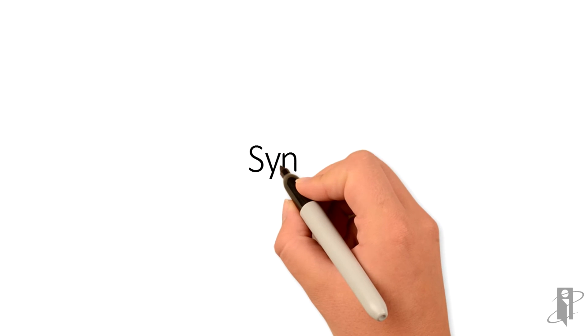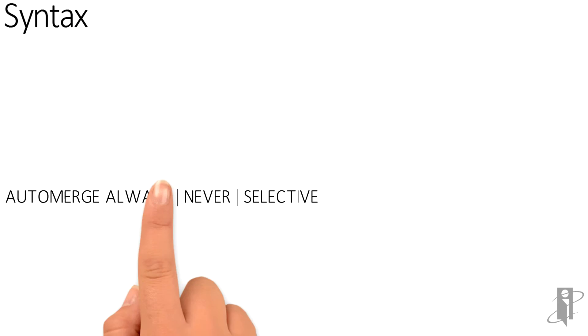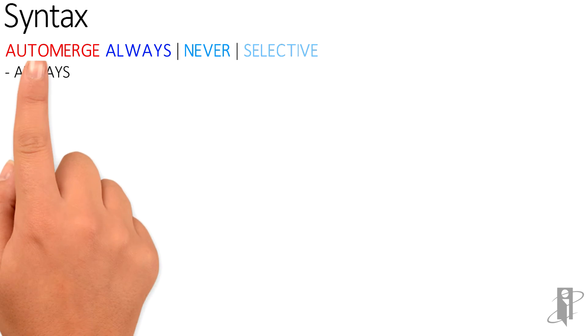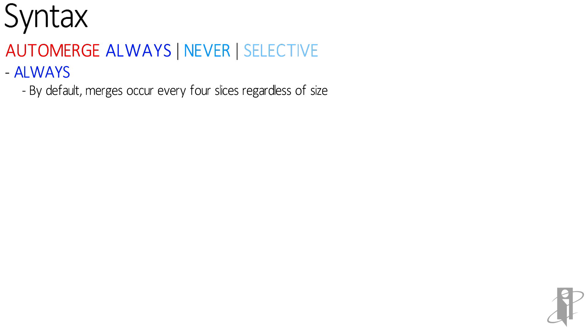So what is the syntax? It's auto-merge: always, never, or selective. With always — the default value — the merge occurs every four slices regardless of the size of the slice.